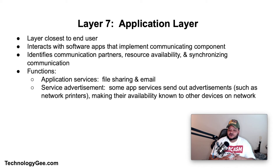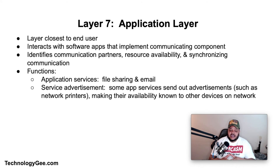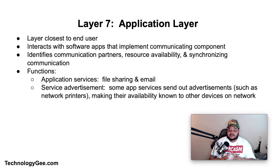Layer seven is the Application Layer. The application layer is the OSI layer closest to the end user, meaning both the OSI application layer and the user interact directly with the software application. This layer interacts with software applications that implement a communicating component. Application layer functions typically include identifying communication partners, determining resource availability, and synchronizing communication. When identifying communication partners, the application layer determines the identity and availability of communication partners for an application with data to transmit.